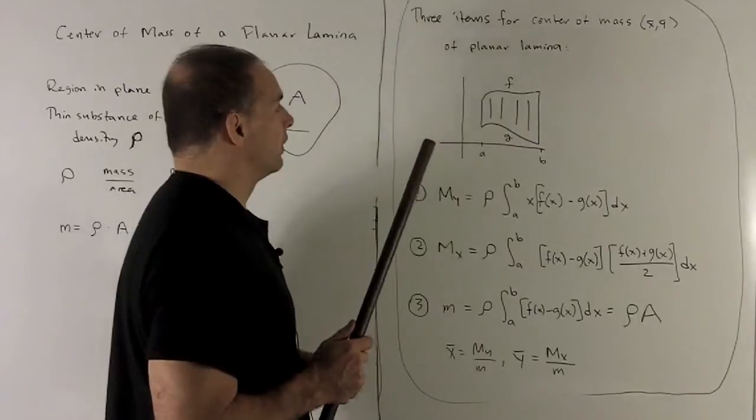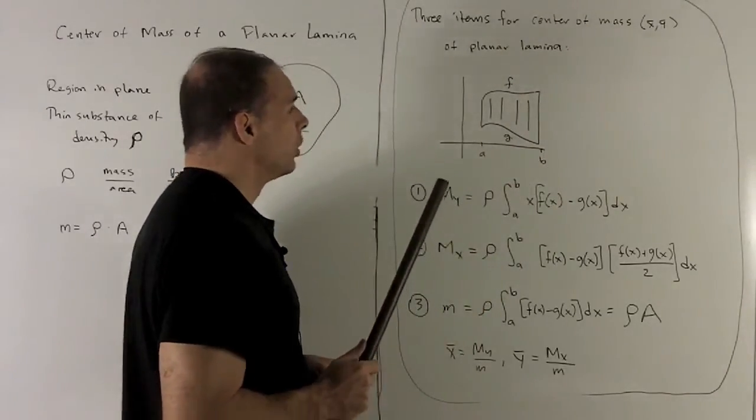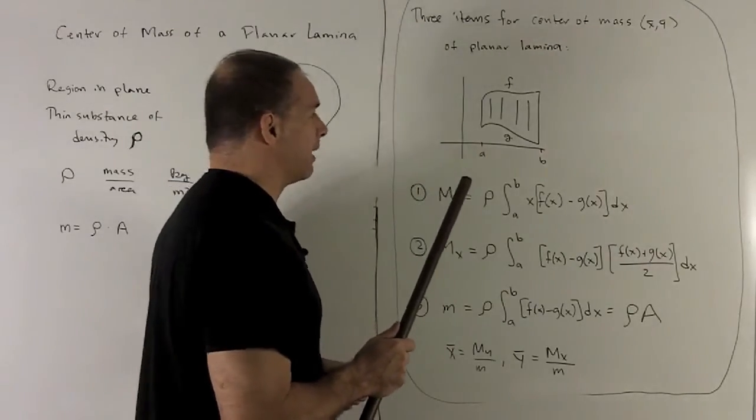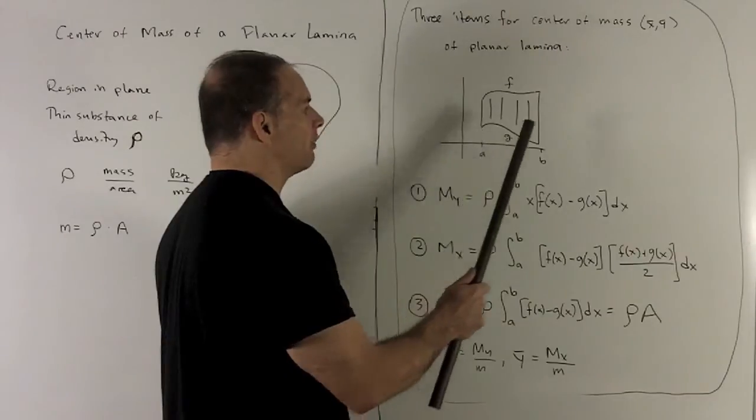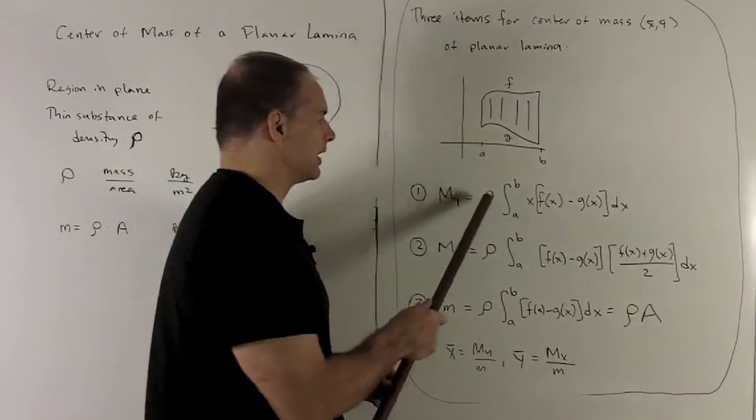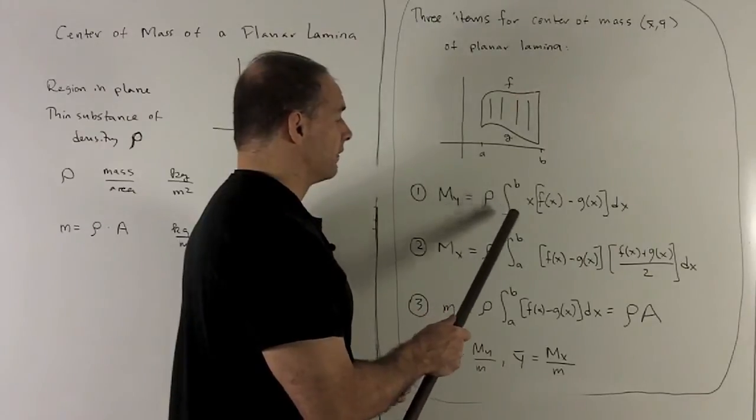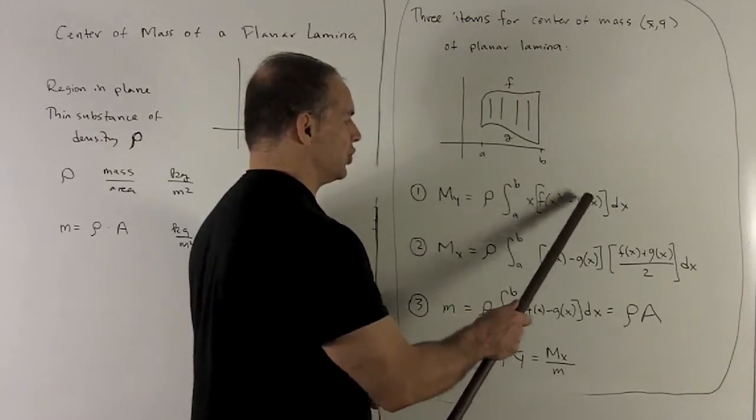We're going to need three things. We want the center of mass, x bar, y bar. We'll consider the situation where I have function on top, function on the bottom, and then we're cut off by a and b. For the moment about y, we take the density on the outside, definite integral from a to b, x times difference of f and g dx.